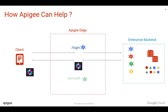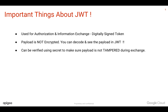The client can use this token to access an API like Get Account Information, where Apigee can verify the token and forward the request to the backend, which will send the response back to the client. JWT is used for authorization and information exchange using a digitally signed token.